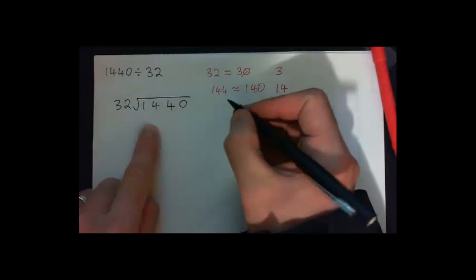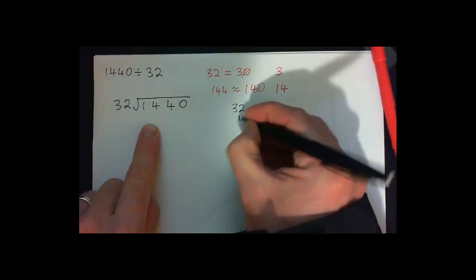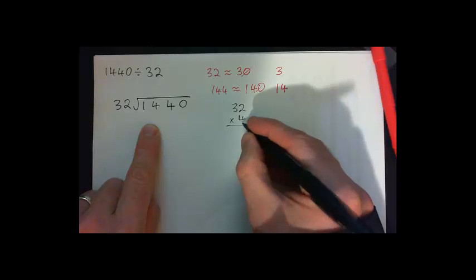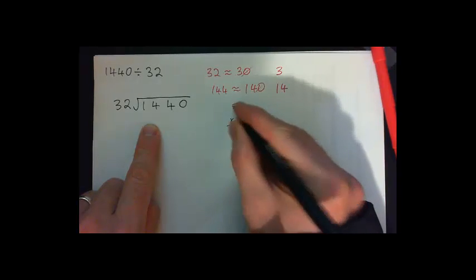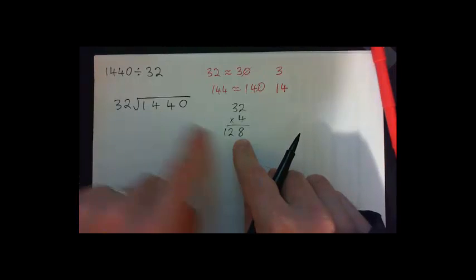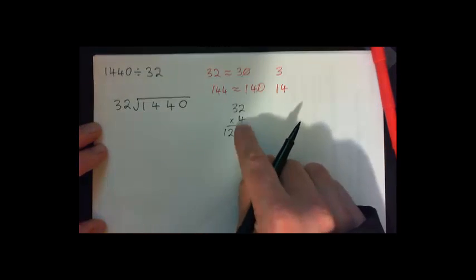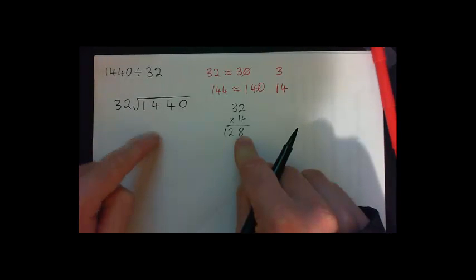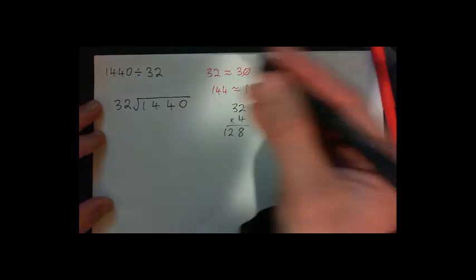But instead of doing it here yet, I'm just going to go 32 times 4 and see what I get. 4 times 2 is 8. 4 times 3 is 12, so 128. That looks about right to me because when I subtract it, the subtraction will be less than 32 most likely, I think. Let's see what happens.